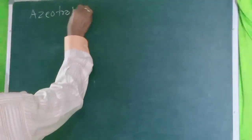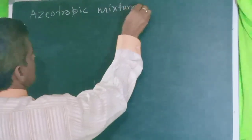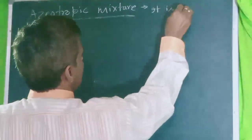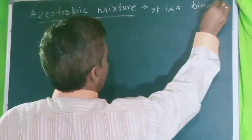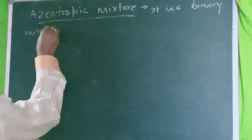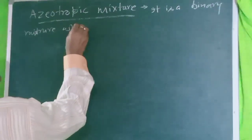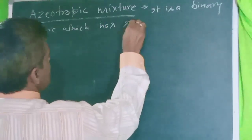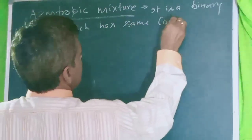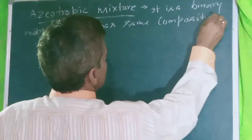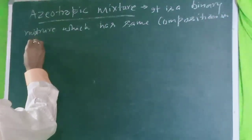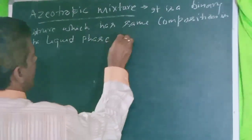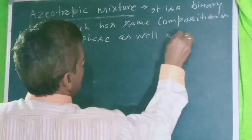What do you mean by azeotropic mixture? The key point is that in an azeotropic mixture, the composition remains the same in the liquid phase as well as in the vapor phase.